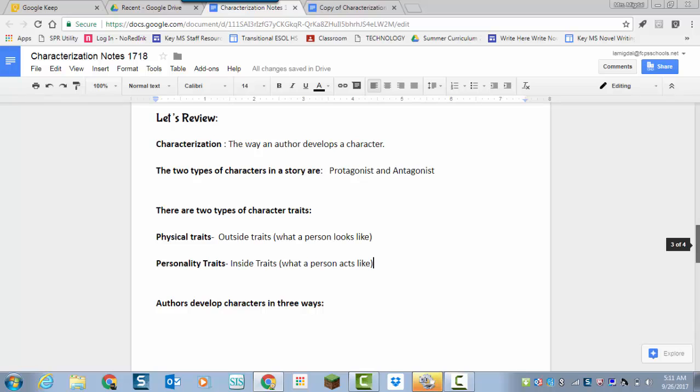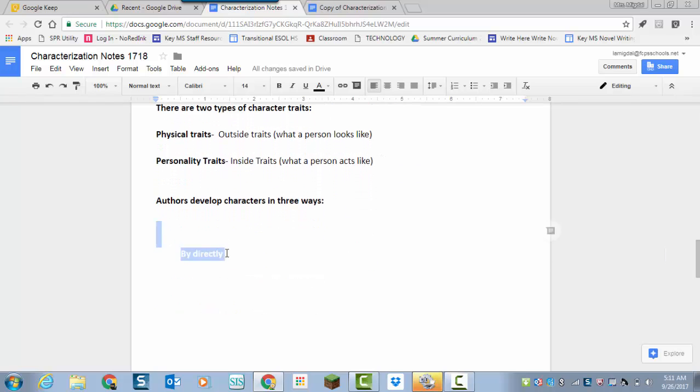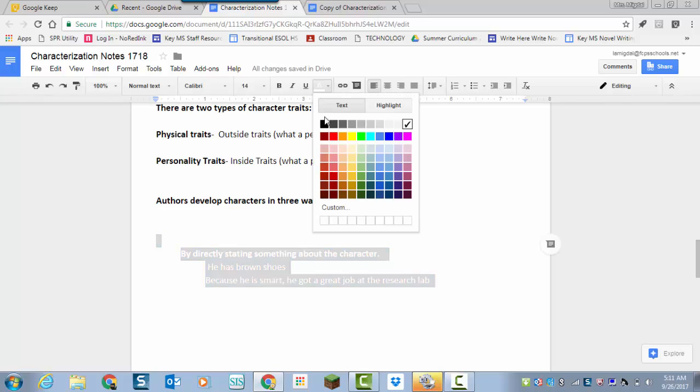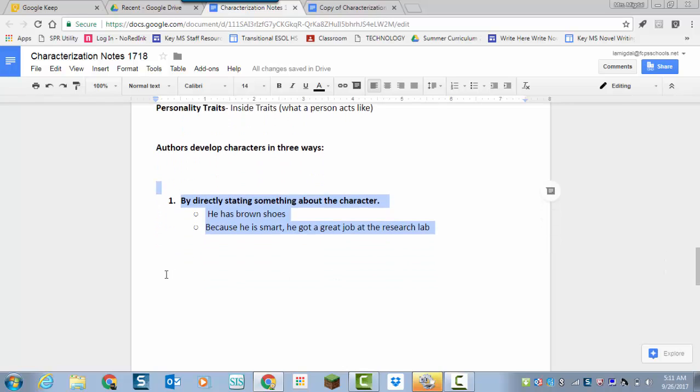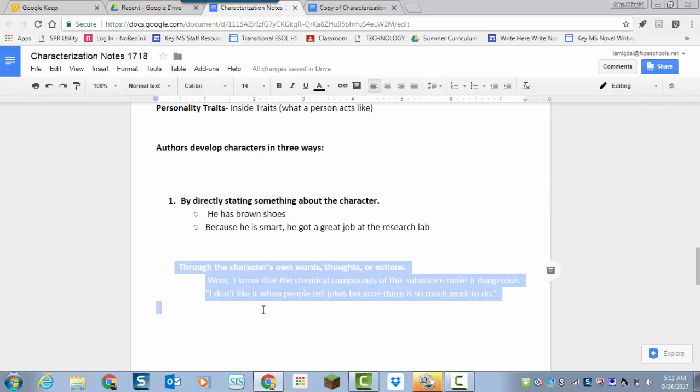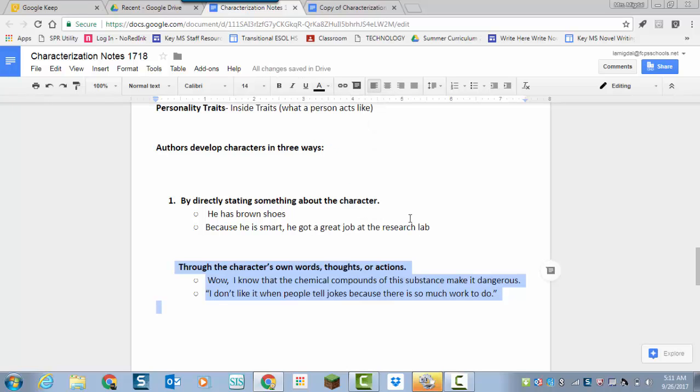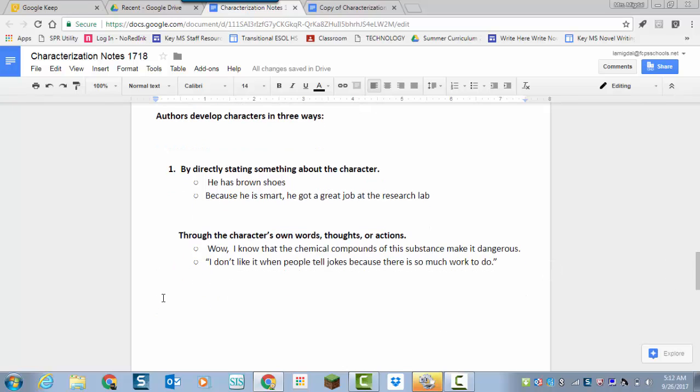And then, do you remember the three ways that an author develops a character? Oops, let's get that number one in there. The first way is by directly stating something about the character. And there are those two examples. He has brown shoes. Or because he's smart, he got a great job at the research lab. The second way is through a character's own words, thoughts, and actions, by what that character says.